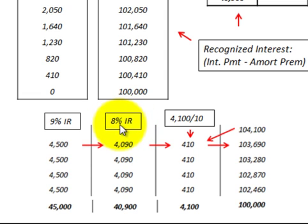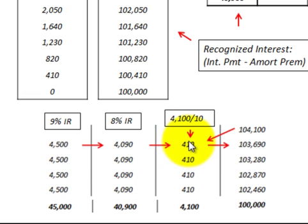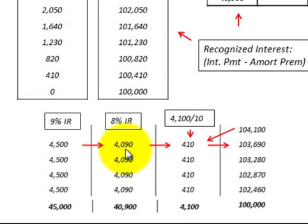First we calculate the premium to bonds payable amortized amount. We take the total premium of $4,100 and divide by 10 periods, coming up with $410 of amortized premium each period — a constant amount every period. We take this $410 amortized premium and subtract it from the $4,500 interest payment to bondholders, giving us the interest expense we recognize each period: $4,090. That is also a constant amount each period.